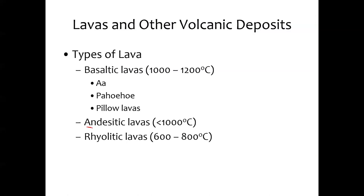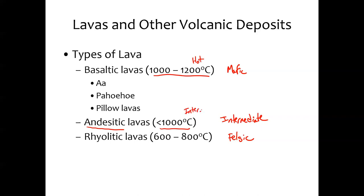So that was basaltic lavas. We also have andesitic lavas, which are intermediate in composition, and rhyolitic lavas, which are felsic. We're going to focus on the characteristics of these eruptions. Basaltic lavas are the hottest, andesitic lavas are intermediate, and rhyolitic lavas are the coolest. That's connected to the melting points of these minerals — felsic minerals have the lowest melting points, while lavas of mafic composition have the highest overall melting points. So basaltic lavas will be hotter than andesitic, which will be hotter than rhyolitic lavas.